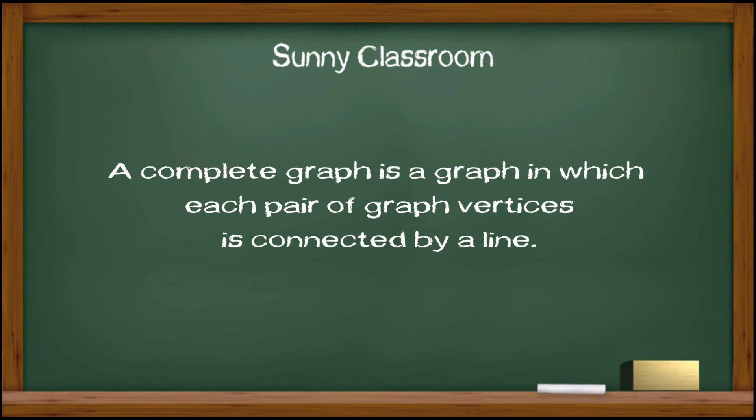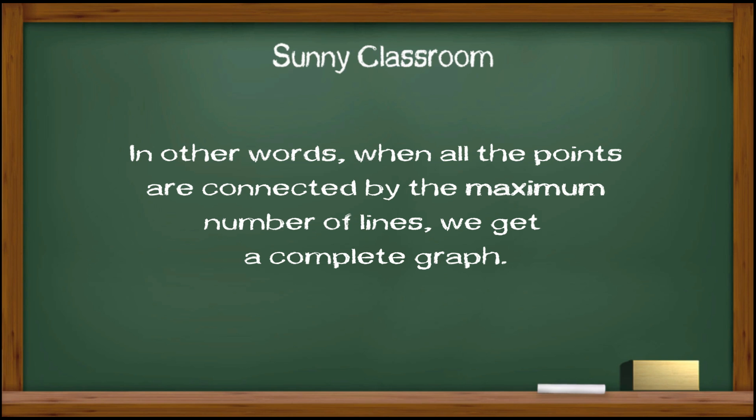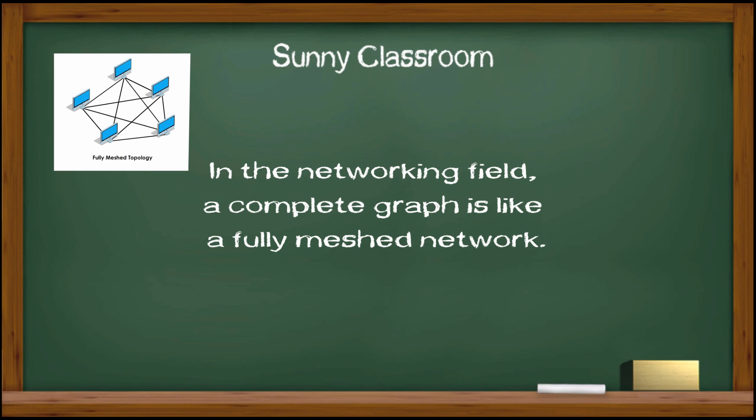A complete graph is a graph in which each pair of graph vertices is connected by a line. In other words, when all the points are connected by the maximum number of lines, we get a complete graph. In the networking field, a complete graph is like a fully meshed network.